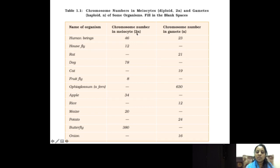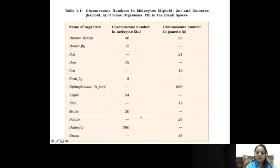The diploid is always mentioned as 2n and the haploid as n. For example, in a human being, the somatic cell consists of 46 chromosomes, so the gametes will consist of only half — that is 23 — which is haploid. Similarly, if a housefly has 12 chromosomes, the chromosomes in the gametes will be 6. And if the gametes have 21, then the chromosome number of the cell will become 42. This table is in the textbook — kindly try to fill it up, as the somatic cells have the diploid number and gametes have the haploid number of chromosomes.